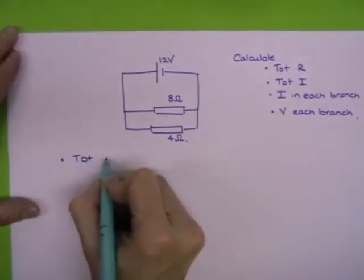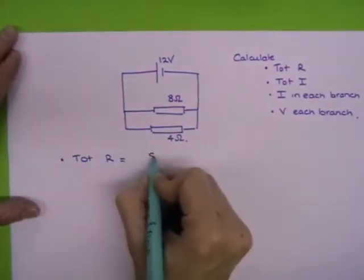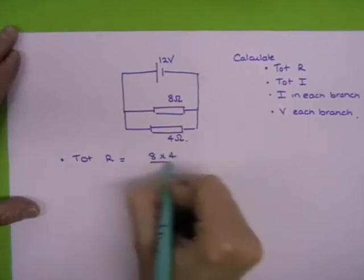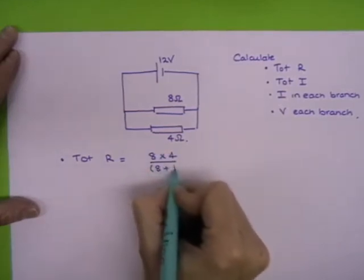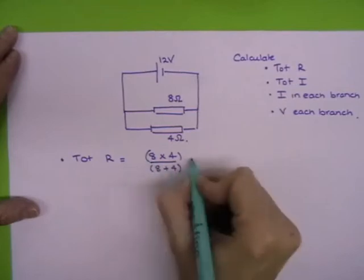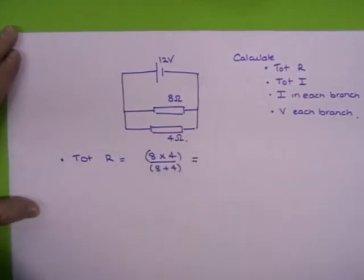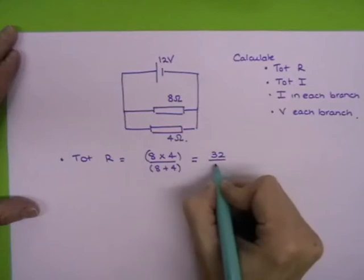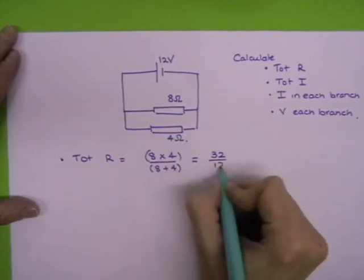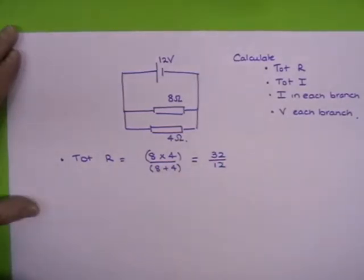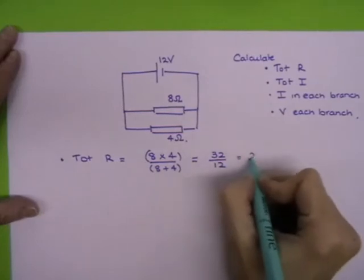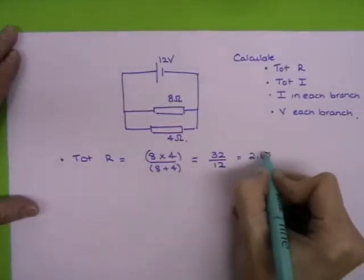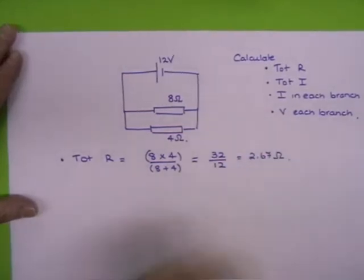So the first thing, total resistance. That's a product over the sum: 8 times 4 over 8 plus 4. 8 times 4 is 32, and you're dividing that by 8 plus 4, which is 12. That gives you 2.67 ohms. That's your total resistance.